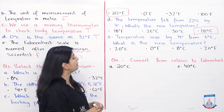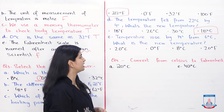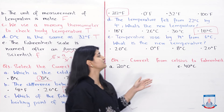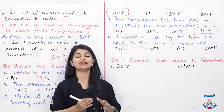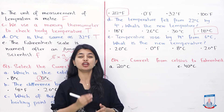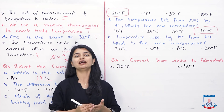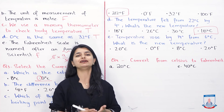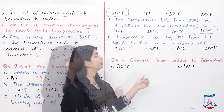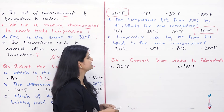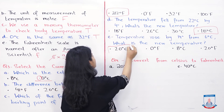Part E: the temperature rose by 14 degrees from 6 degrees — what is the new temperature? Since it increased, we add: 6 plus 14 equals 20. Since we are given Celsius, the answer is 20 degrees Celsius.